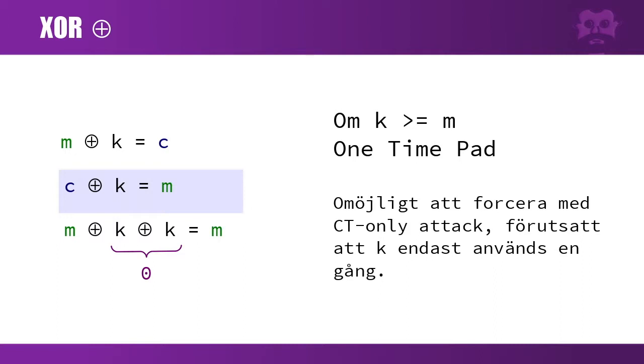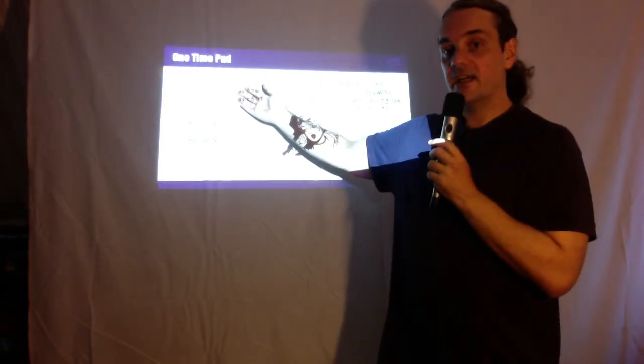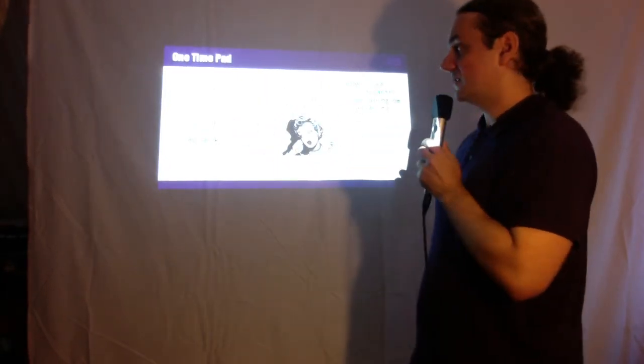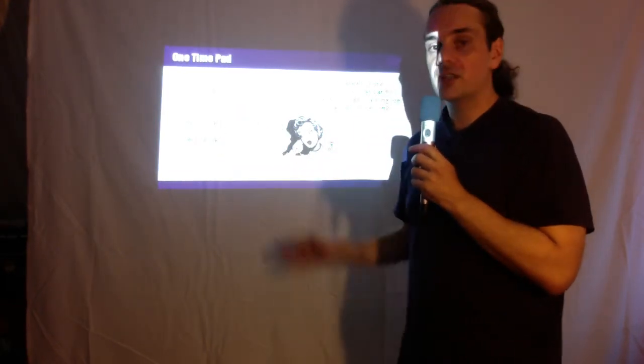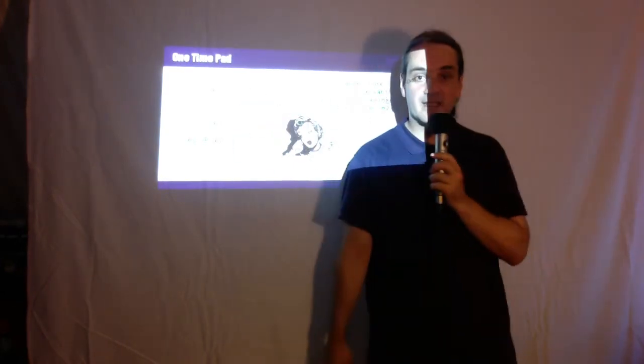The proof that it's secure isn't a mathematical proof, but you can intuitively understand: if Eva intercepts a cryptotext C, she still has no idea what the message is. If she guesses a key K, maybe the message becomes C XOR K equals Miljöpartiet. But if she tries C XOR another key K2, it might become Piratpartiet. Eva has no idea whether the text is Miljöpartiet or Piratpartiet—it depends only on the key. Eva doesn't know the key, so she can use all the computers in the world and still have no idea what the message is.